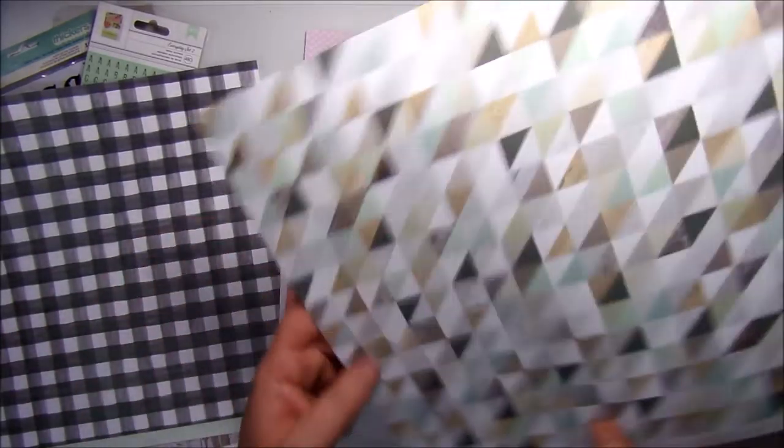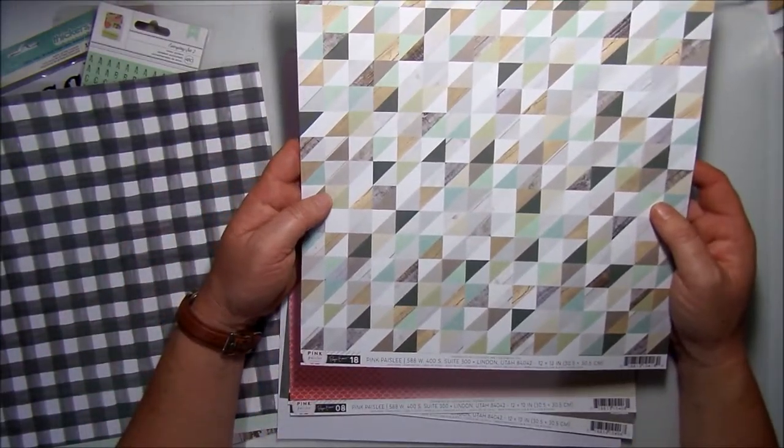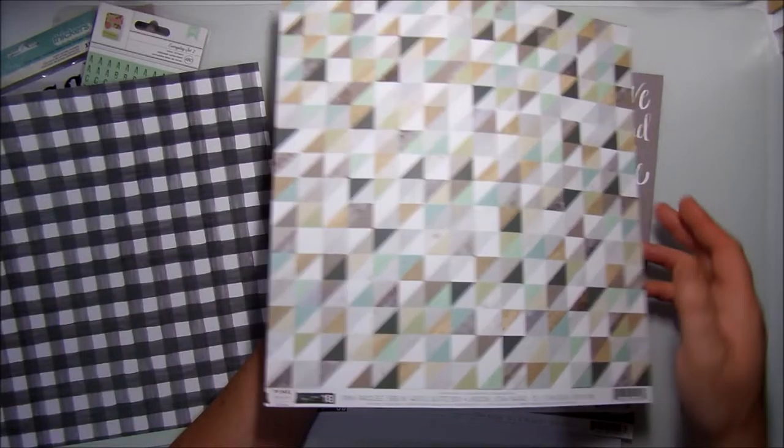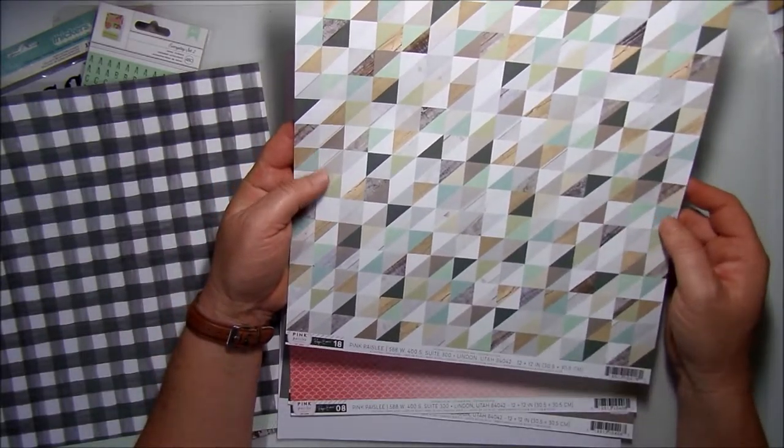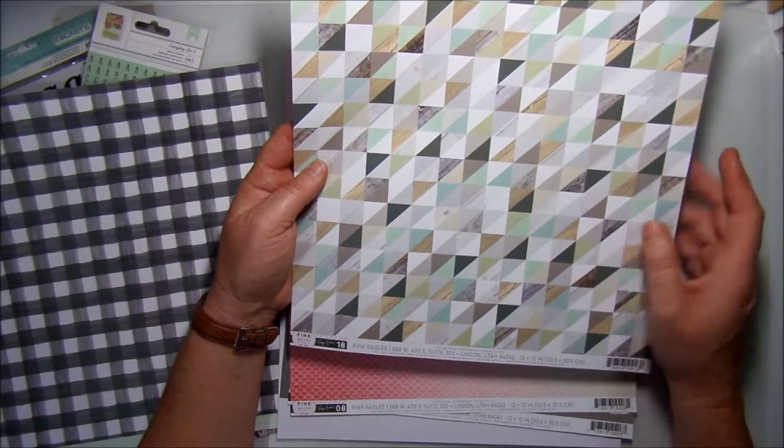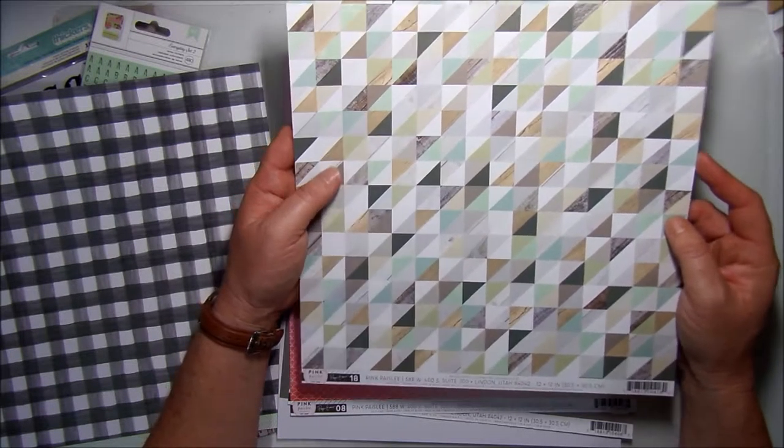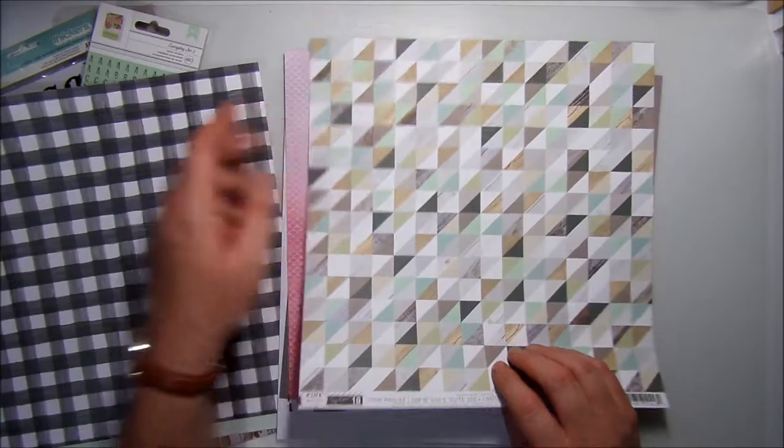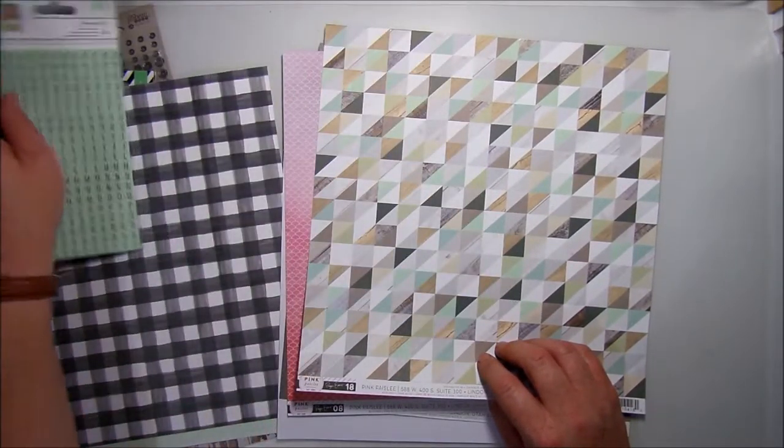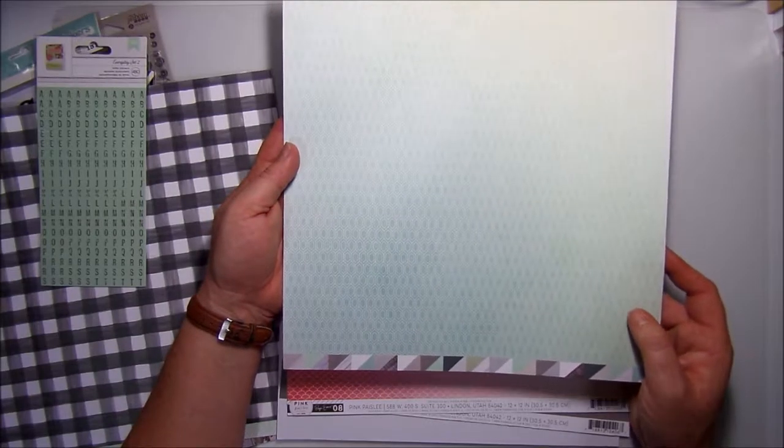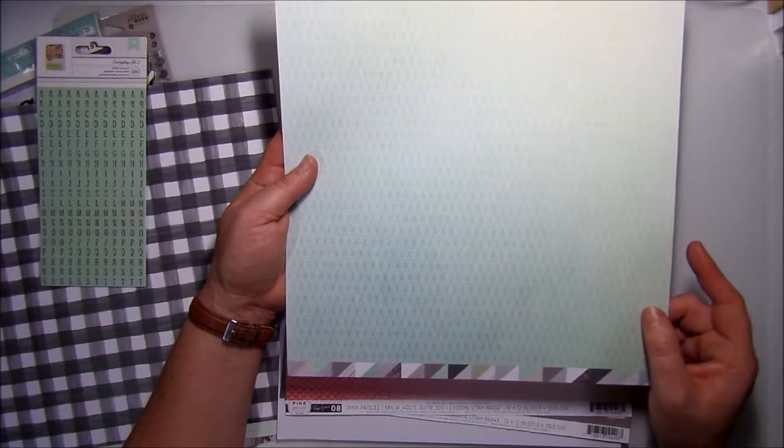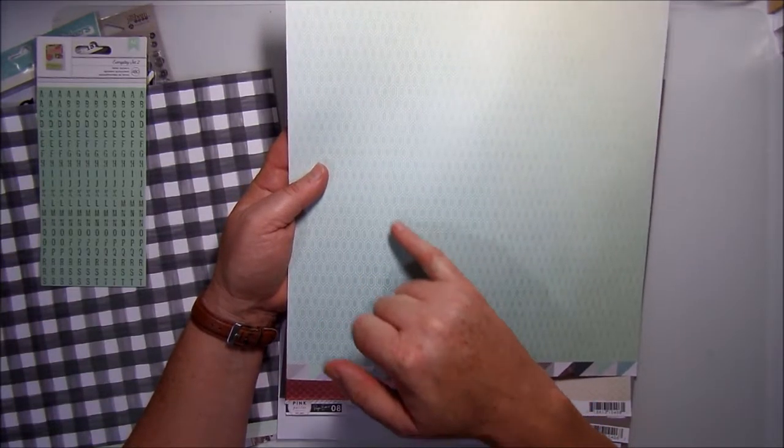Then we have three sheets of Pink Paisley, these are the Paige Evans range. As you can see just down here, this one has a lovely geometric pattern of triangles on there. And also you can see like the wooden bits in it and obviously again the green which matches your alphas. And then on this side we have another nice sheet of green toned paper with almost like a diamond sort of pattern on it which is nice.